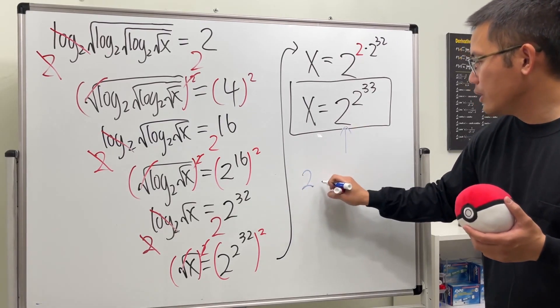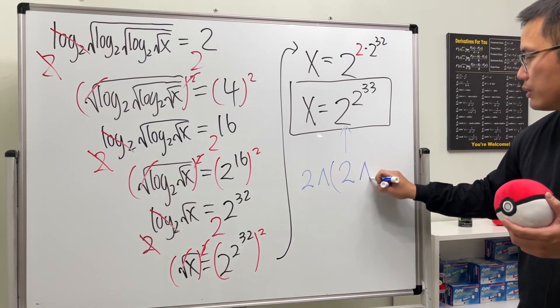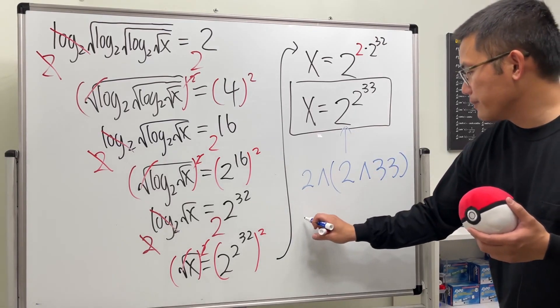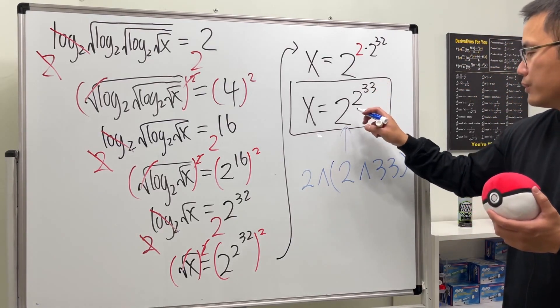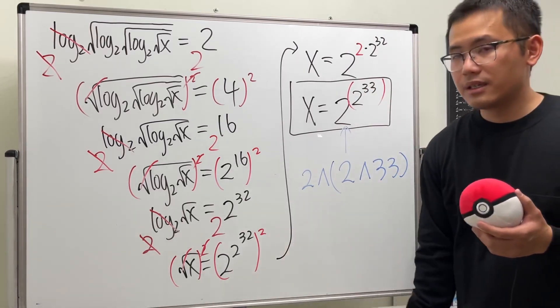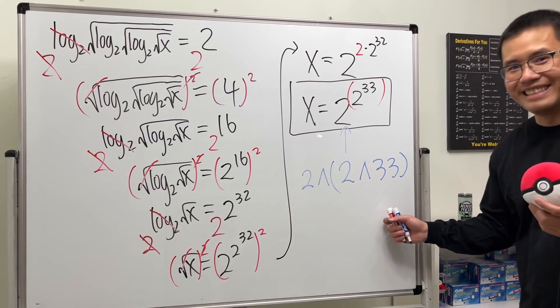And perhaps before we go I want to tell you this notation right here means we have 2 raised to the power of 2 and then raised to the power of 33. All right, because this right here really means 2 to this power like that, so it's not like that. But yeah, let me know how big this number is. Yeah, that's it.